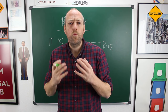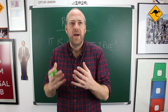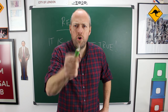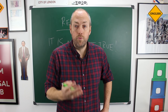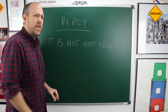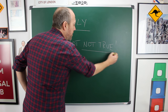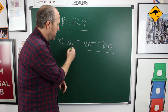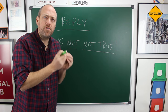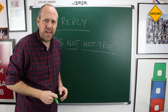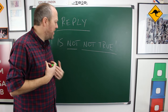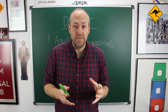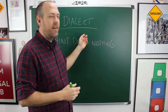Another reason is when we are replying to a previous statement. Imagine somebody says to you 'that is not true' and you want to reply — you can say 'it is not not true.' We are repeating their words back to negate what they said. They said 'it's not true' and we say 'it is not not true.' The final reason you might use the multiple negative is because it's part of your dialect.